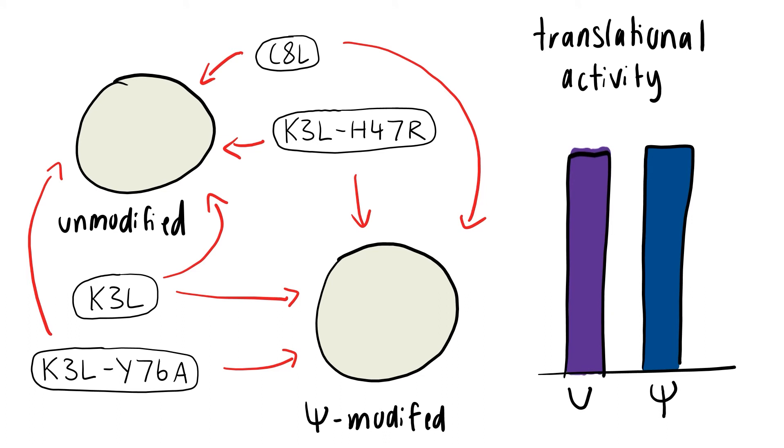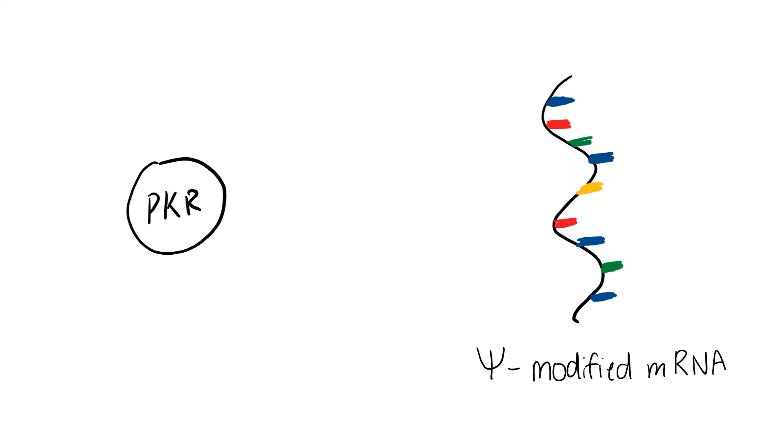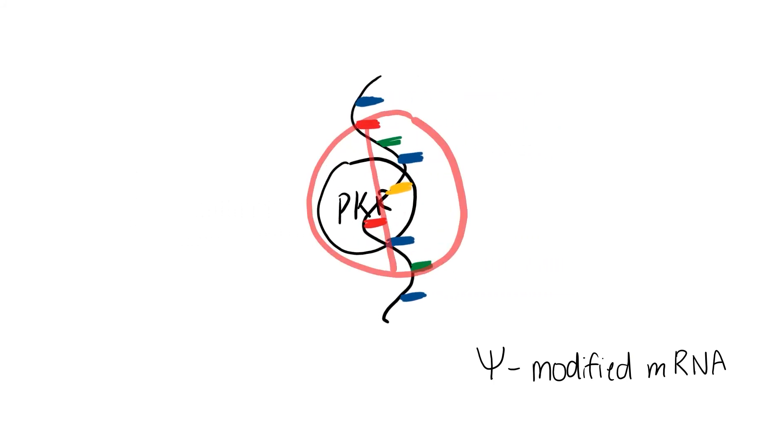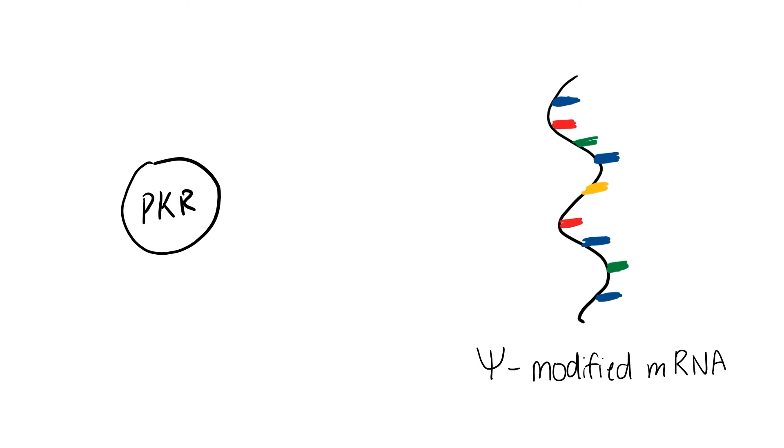This was further confirmed using PKR-deficient mouse embryonic fibroblasts where both modified and unmodified RNA had similar translational activity. Pseudouridine modified mRNA was demonstrated to not competitively inhibit PKR when it failed to inhibit PKR activation when mixed in high concentrations with a known activator. This suggested a lack of binding between PKR and modified mRNA, which was confirmed using biotinylated RNA pulldown and detected using Western blotting.